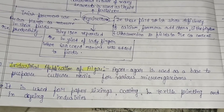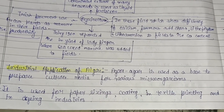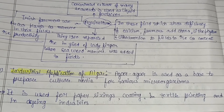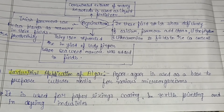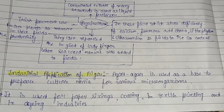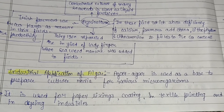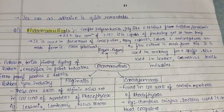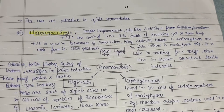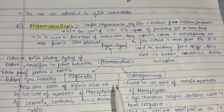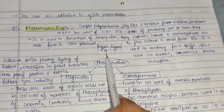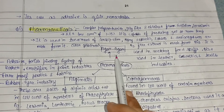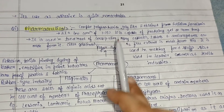Regarding industrial applications, agar-agar is used as a base to prepare culture media for various microorganisms. It is used for paper sizing, coatings in textile printing, and in dyeing industries. Its use as an adhesive is also notable.